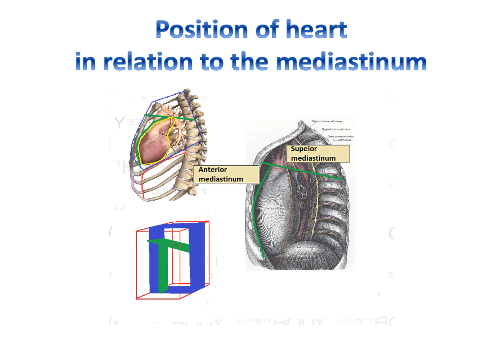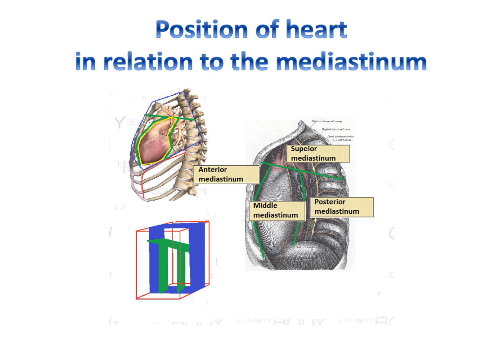The anterior mediastinum is in front of the pericardium. The posterior mediastinum is behind the pericardium. The middle mediastinum contains the pericardium and its contents. Thus, the heart is located exactly in the middle mediastinum.